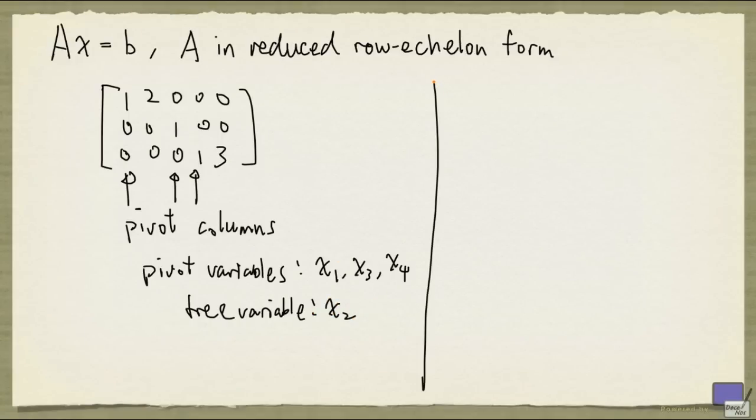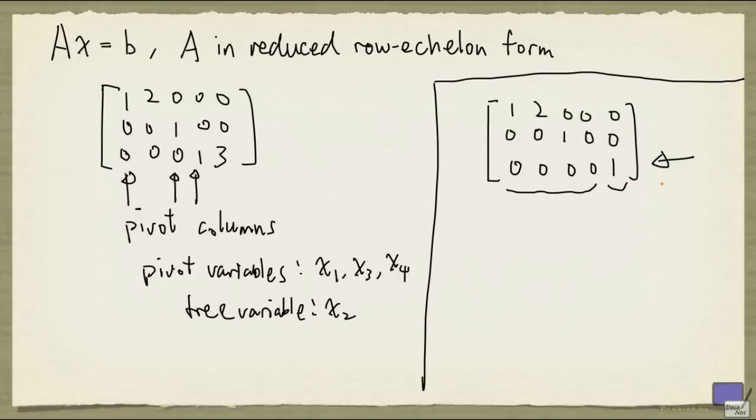So how do we tell by looking at the augmented matrix whether a system has a solution or not? Consider this augmented matrix here. Now, look at the third row. We have zeros in the columns that correspond to the variables, and a non-zero on the right-hand side. This row represents the equation 0 equal to 1.